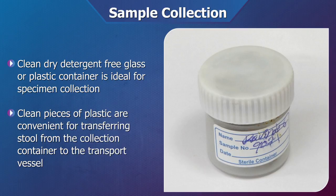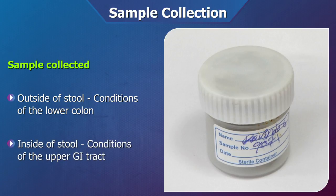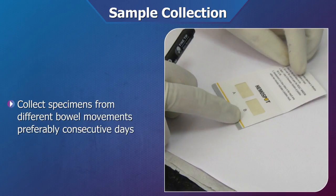The stool samples should be collected from different areas of the formed stool. Samples from the outside of the stool are most likely to reflect the condition of the lower colon, while specimens taken from inside the stool are more likely to reflect conditions of the upper gastrointestinal tract. The two test fields provided in Hemospot facilitate detection and localizing the source of bleeding. Because bleeding may be intermittent, it is preferable to collect specimens from different bowel movements.